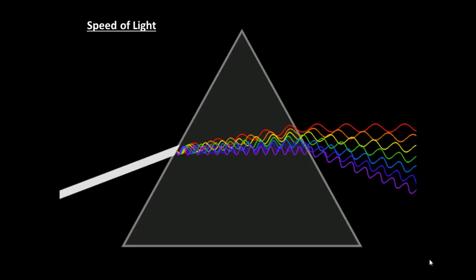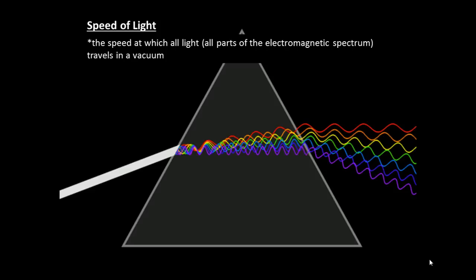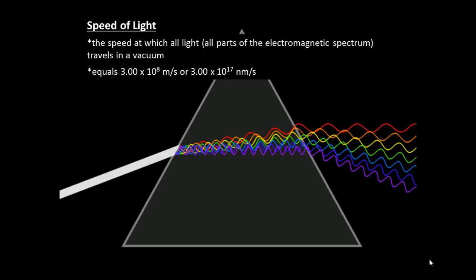All light, meaning all parts of the electromagnetic spectrum, travel at the same speed in a vacuum. This is the most accurately known constant in the world. The speed of light, which is 3.00 × 10⁸ meters per second, is represented by a lowercase c.